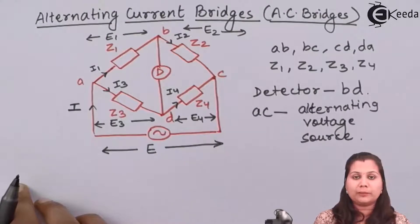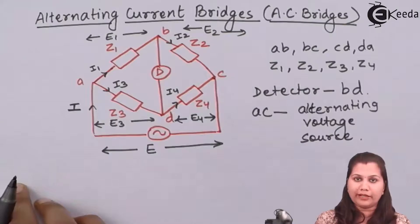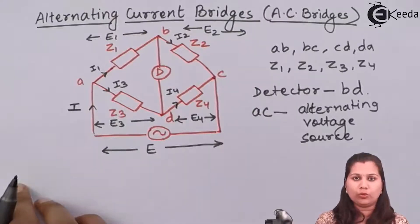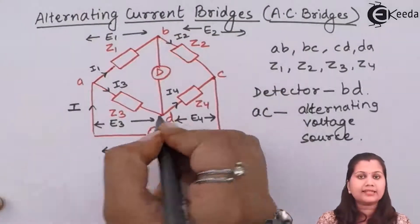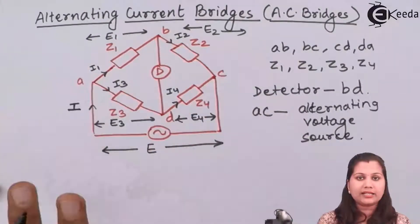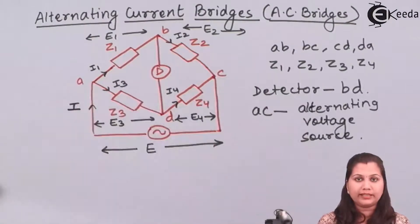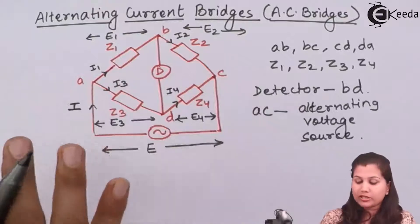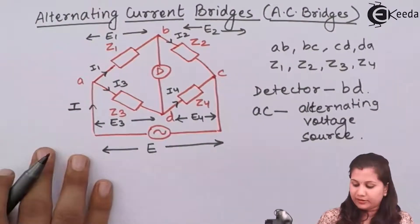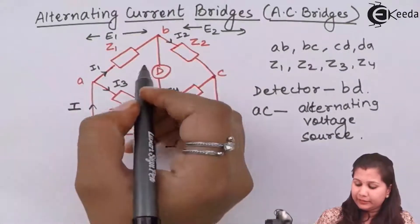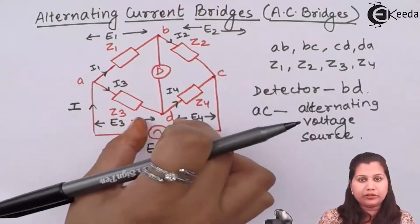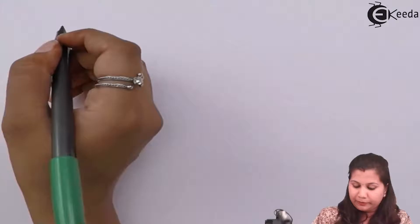We know that in the Wheatstone bridge, the bridge is said to be balanced when the galvanometer shows null deflection, meaning no current is passing through the galvanometer. No current passing means the potential difference between points B and D is zero — B and D are at the same potential. Here also, this alternating current bridge is said to be balanced when the detector shows null deflection. So B and D will be at the same potential, which means the voltage drop E1 is equal to the voltage drop E3. So we can say that the bridge is balanced.